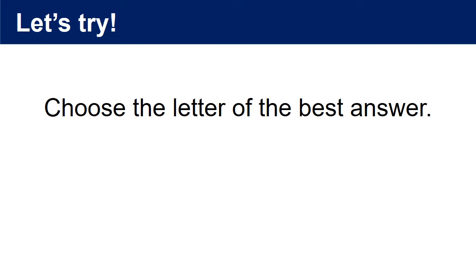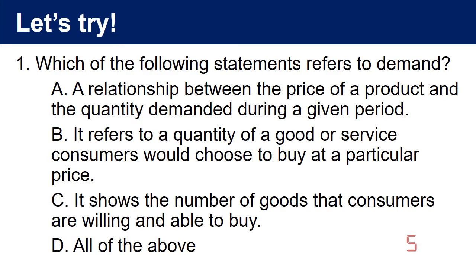Before we proceed to our discussion, let us try to answer the following questions. Question 1: Which of the following statements refers to demand? A. A relationship between the price of a product and the quantity demanded during a given period. B. It refers to a quantity of a good or service consumers would choose to buy at a particular price. C. It shows the number of goods that consumers are willing and able to buy. D. All of the above. The answer is A — a relationship between the price of a product and the quantity demanded during a given period.